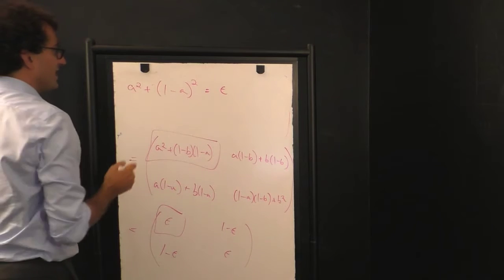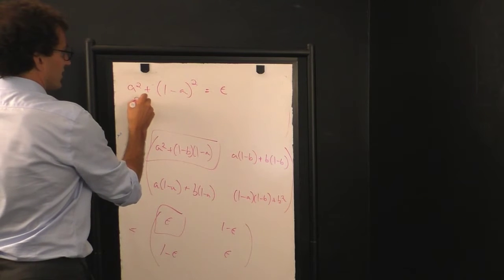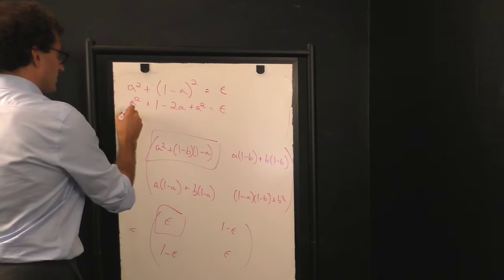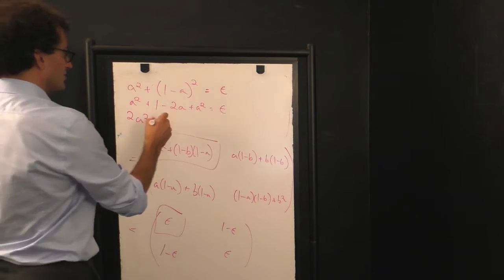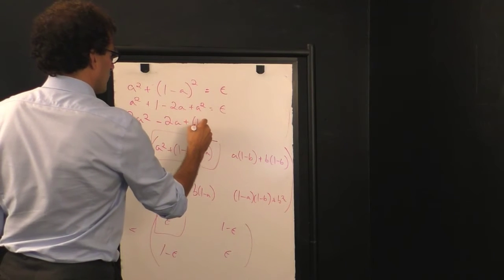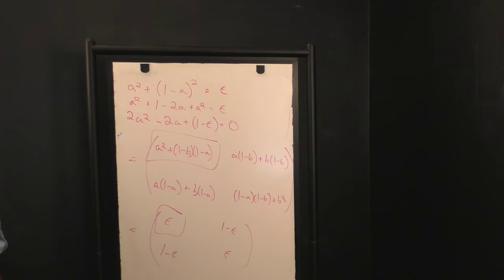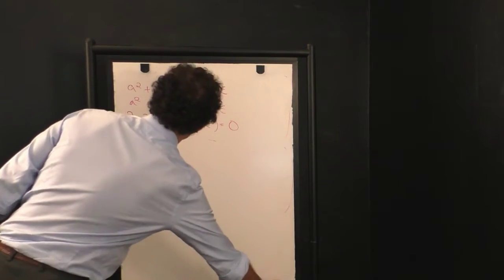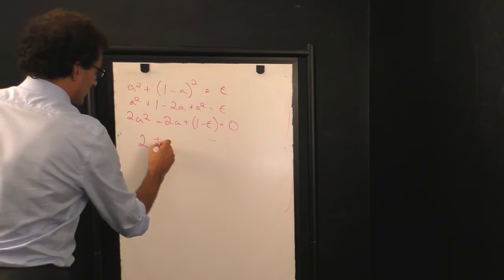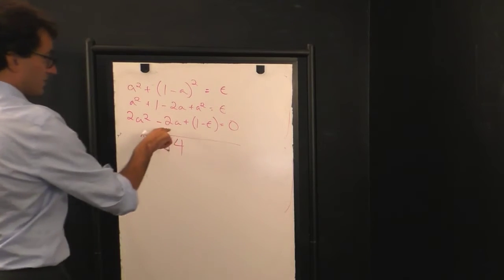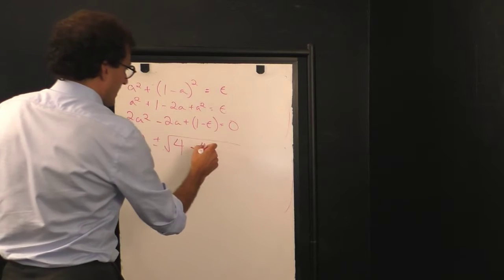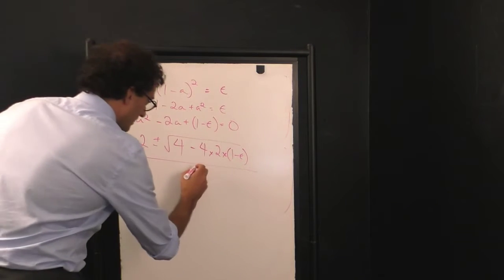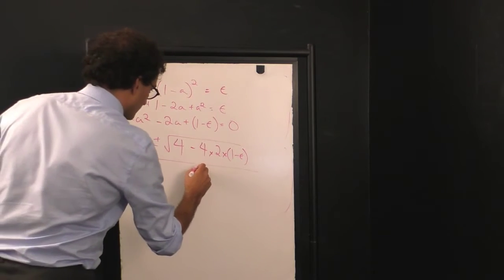So, what happens? We have A squared plus 1 minus A squared because I've told you that A is equal to B. You can prove it yourself if you're going to be distressed by what is about to happen. So, I have A squared plus 1 minus A all squared. So, that's A squared plus 1 minus 2A plus A squared equals epsilon. Using my amazing algebra skills, we have 2A squared minus 2A plus 1 minus epsilon equals 0. And now we use our quadratic equation skills to solve for A. We have negative B plus or minus root B squared, that's 4, minus 4 times A times C, which is 1 minus epsilon, all over 2 times the squared term coefficient, which is 4.